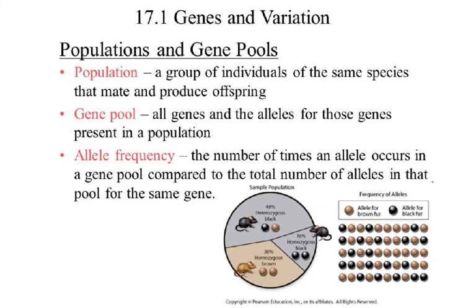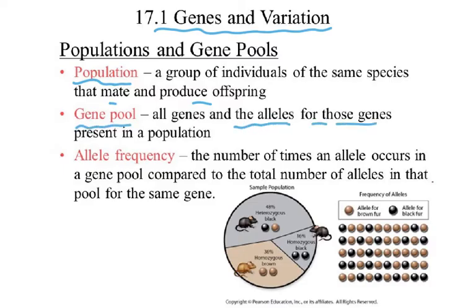I want you to develop some terminology — a vocabulary you need for these questions. First, what is a population? A population is a group of individuals of the same species that mate and produce offspring. We can have a population of black elephants, a population of black cheetahs, a population of green parrots. A population has to be one specific species — you can't say a population of birds or insects; you have to say a population of mango trees or a population of oak trees. Gene pool refers to all genes and the alleles for those genes present in a population.